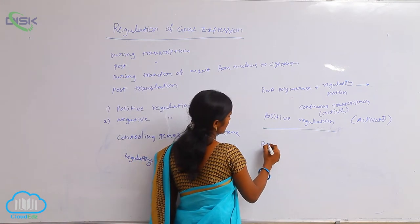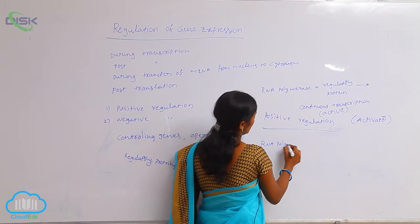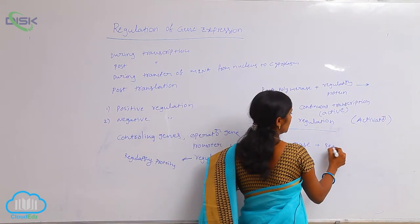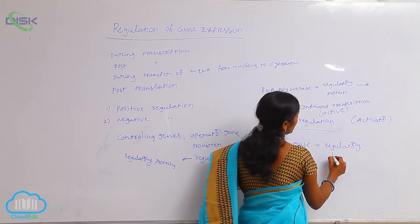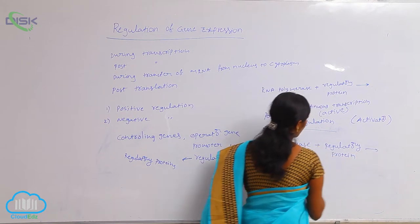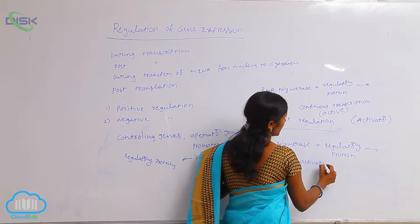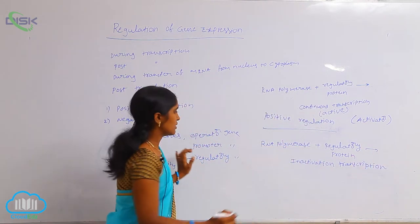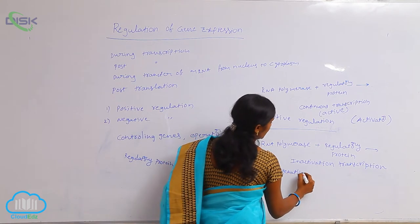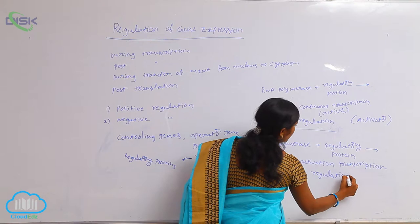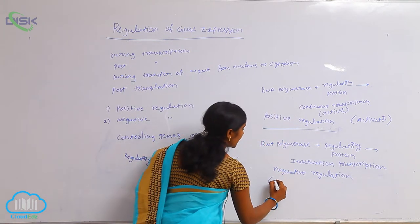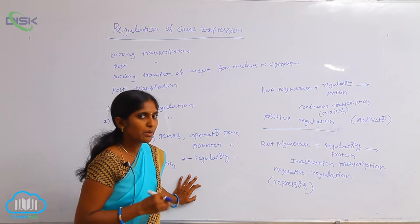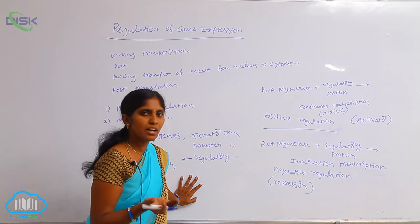In some cases, RNA polymerase binds to the promoter region, but the regulatory protein is bound to the operator site or operator gene. This causes inactivation of transcription — a negative result. Such type of regulation is called negative regulation. The regulatory proteins involved in negative regulation are called repressors. So there are two types of regulatory proteins: activators and repressors.